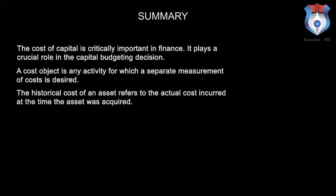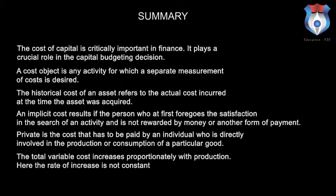Summary. The cost of capital is critically important in finance and plays a crucial role in the capital budgeting decision. A cost object is any activity for which a separate measurement of costs is desired. The historical cost of an asset refers to the actual cost incurred at the time the asset was acquired. An implicit cost results if a person forgoes satisfaction in pursuit of an activity and is not rewarded by money or another form of payment. Private cost is the cost that has to be paid by an individual directly involved in the production or consumption of a particular good. The total variable cost increases proportionately with production, though the rate of increase is not constant.